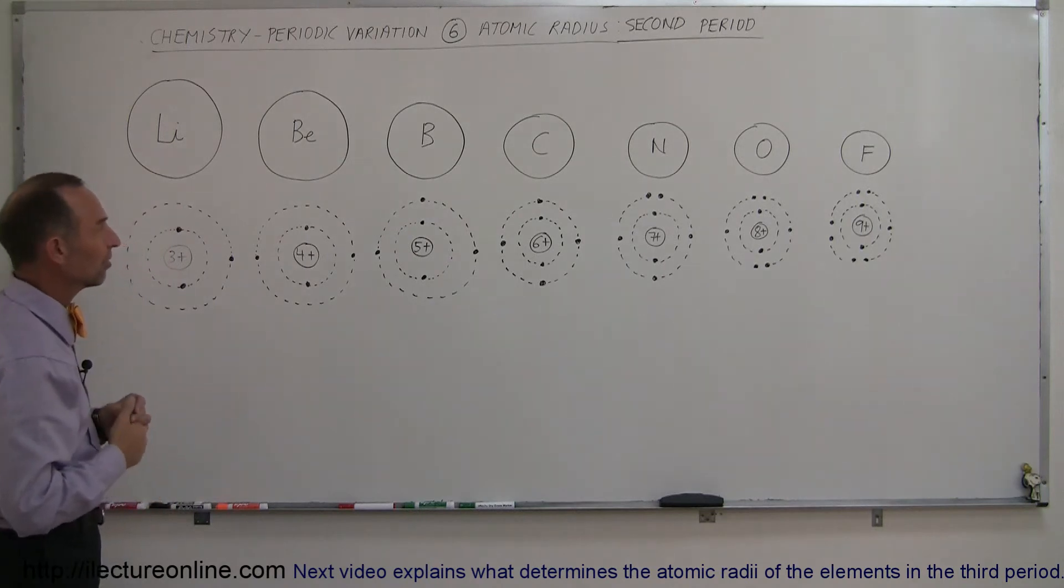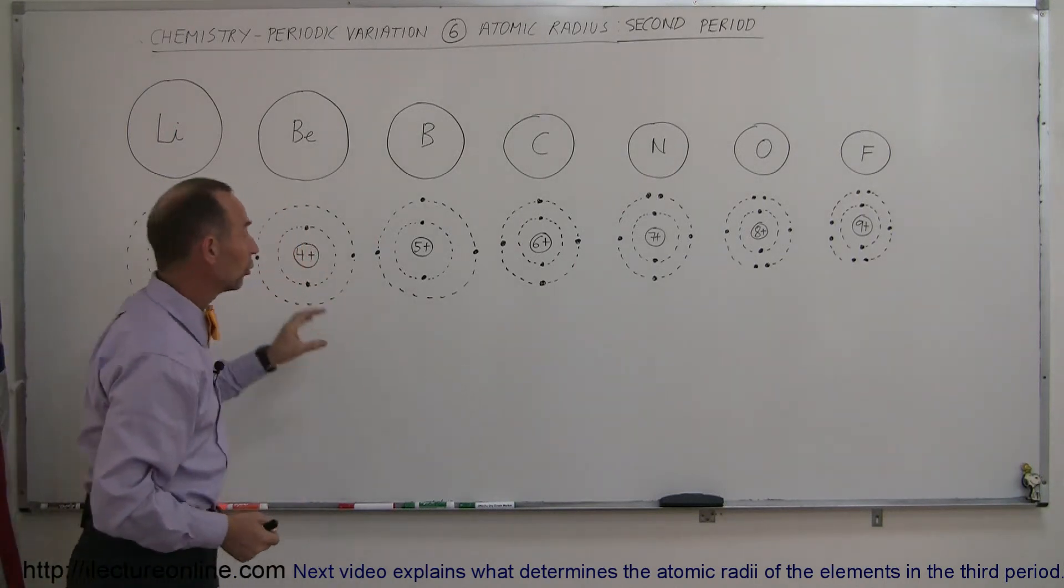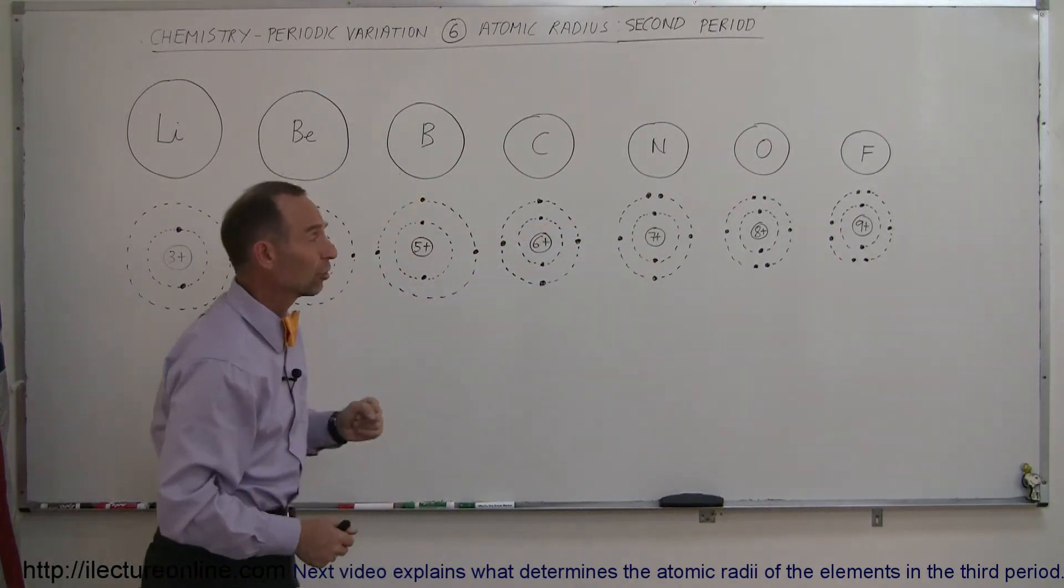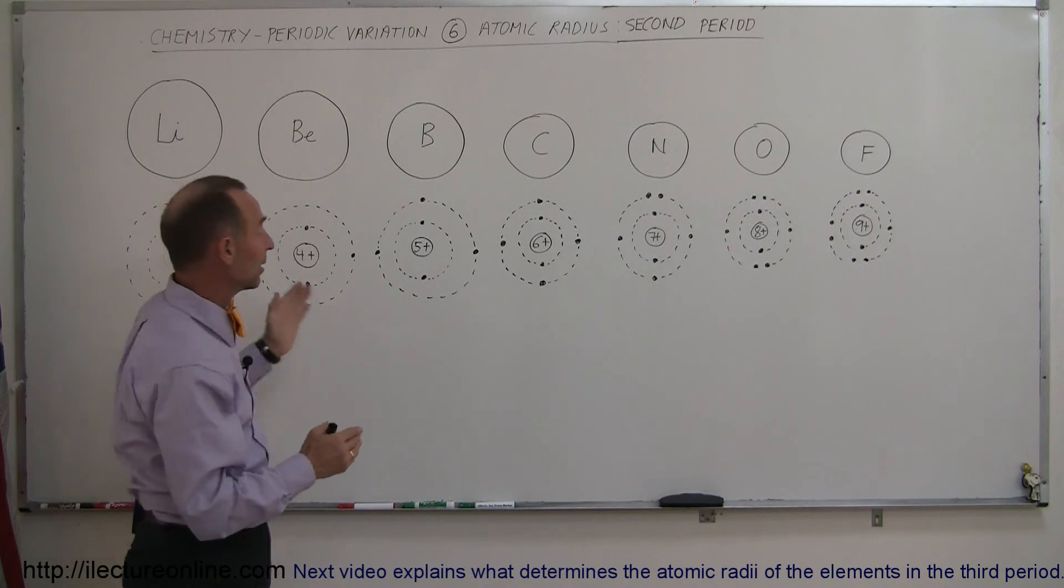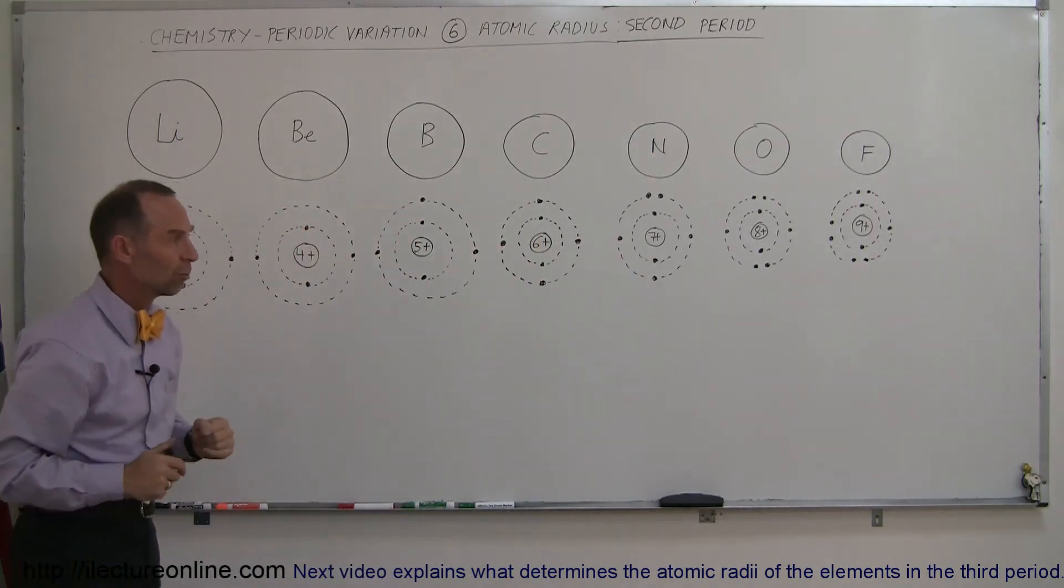So definitely you can see the periodicity here. We go to the second period, the atoms are larger than they are for the first period, but again, going from left to right, the atoms become smaller due to the stronger force of attraction with more charges in the nucleus, positive charge in the nucleus, and the screening effect being pretty well the same for all of these atoms, and therefore the size of the atom continues to get smaller.